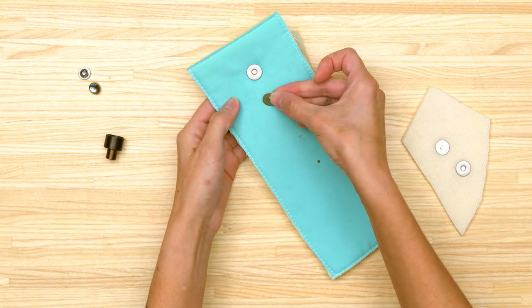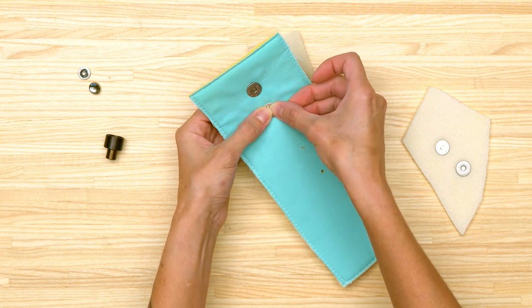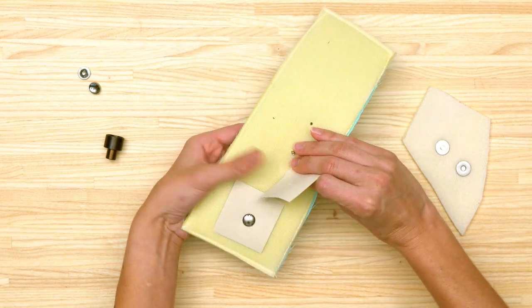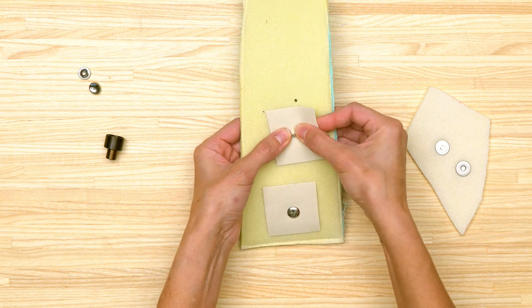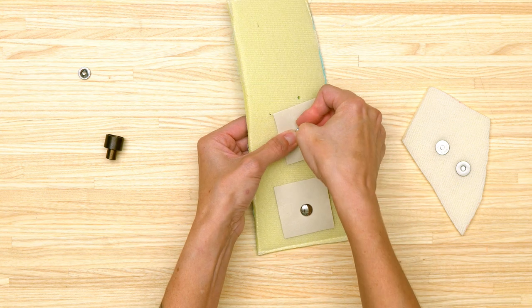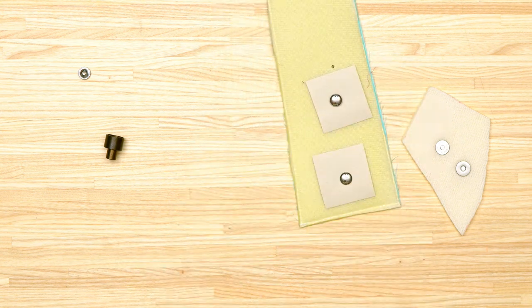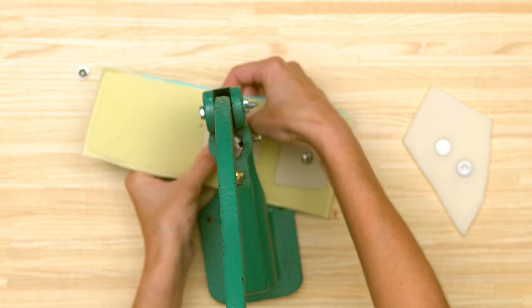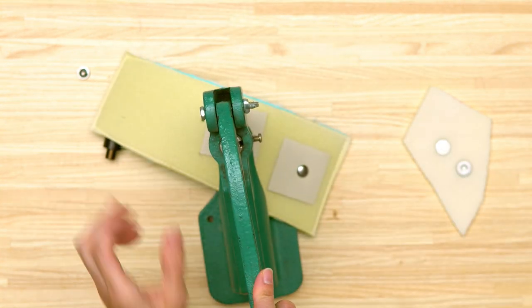Okay so again I'm going to place this on the right side of the fabric. Actually I'll place it down here. On the wrong side I'm going to place that little scrap of interfacing and then one of the dome pieces. Okay again I'm just going to go ahead and slide that on the press and then push down.